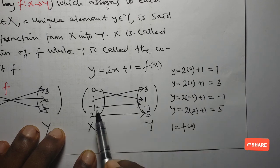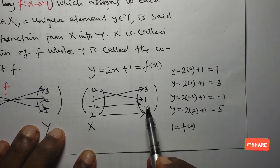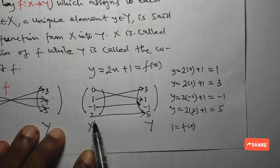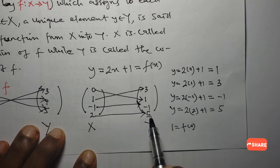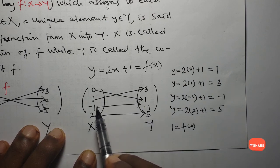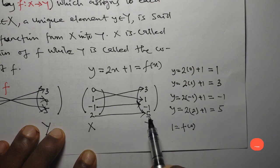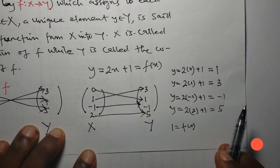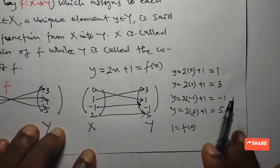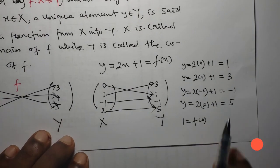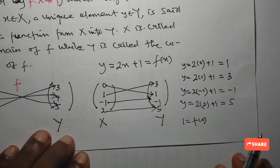Likewise, -1 has been mapped to -1, and 2 has been mapped to 5. So we say -1 is the image of -1, and 5 is the image of 2. We shall now define one last set.